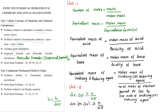In the problems, we will discuss number of moles and molecular formulas related to 5 marks. Equivalent mass of acid is calculated by the formula: molar mass of acid divided by basicity of acid. Next, equivalent mass of base is calculated by: molar mass of base divided by acidity of base.